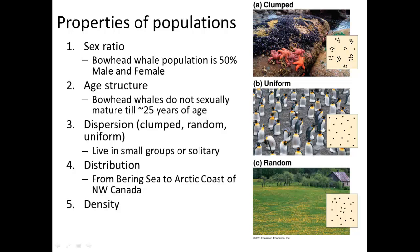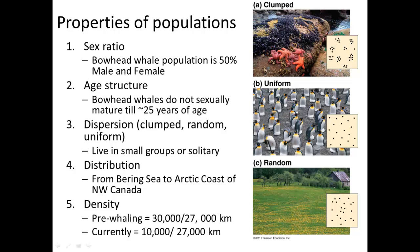The density of bowhead whales pre-whaling was about 30,000 per 27,000 kilometers. Currently it's at 10,000, but it was thought to have been as low as 2,000 to 3,000. So the population experienced a significant decline and seems to be rebounding since then.